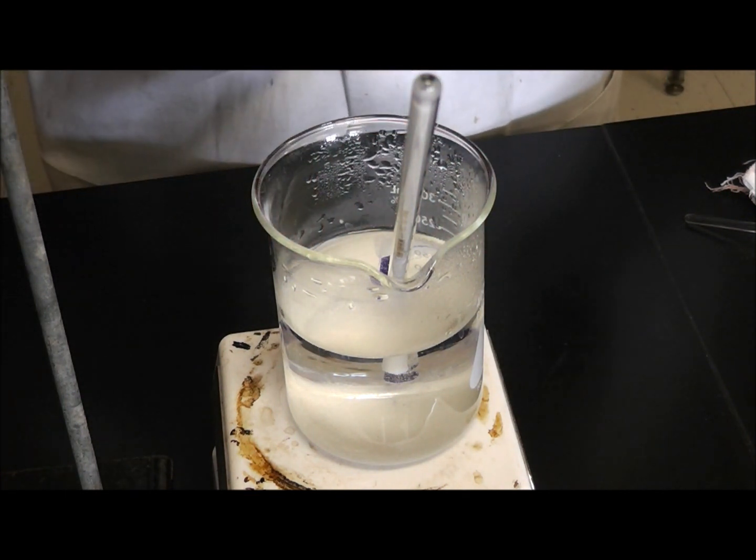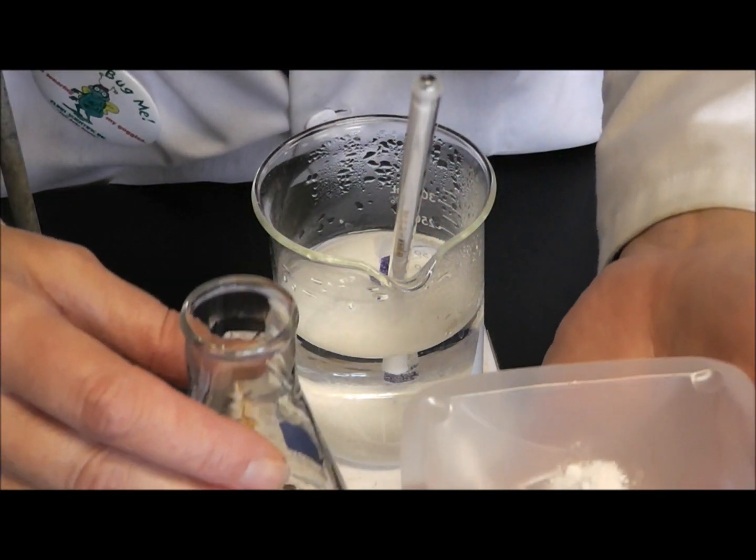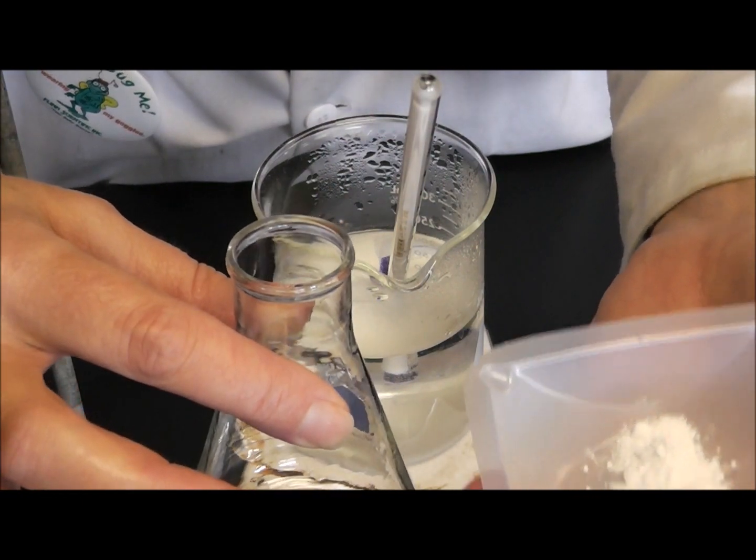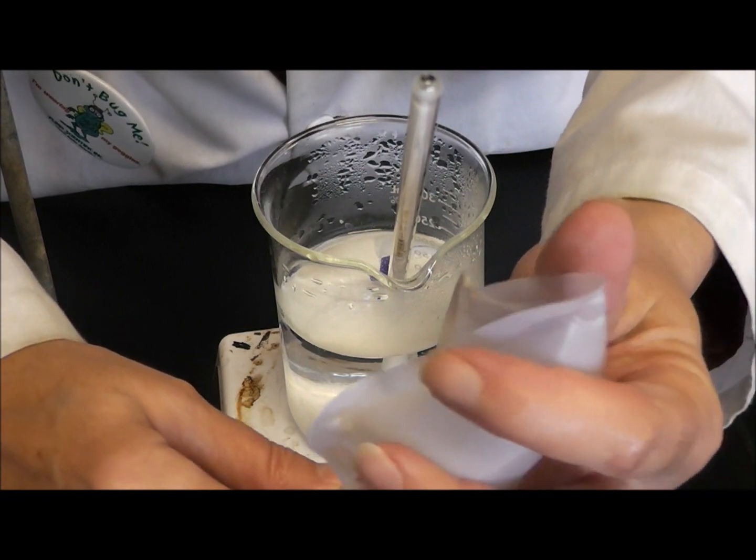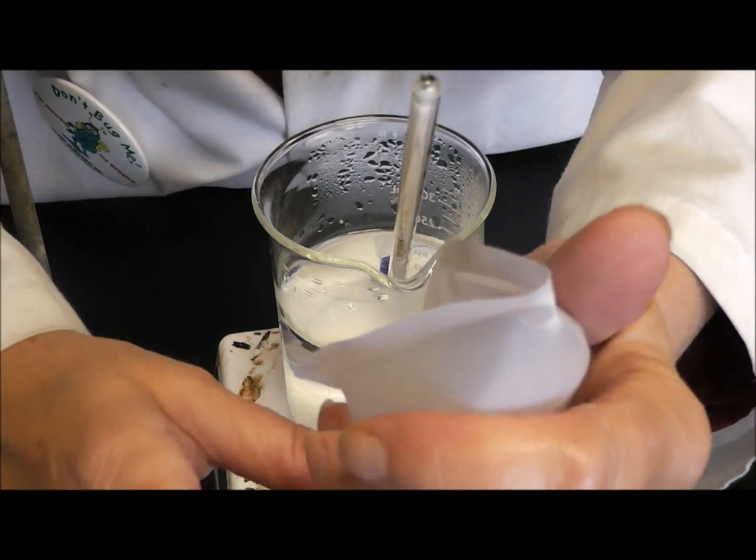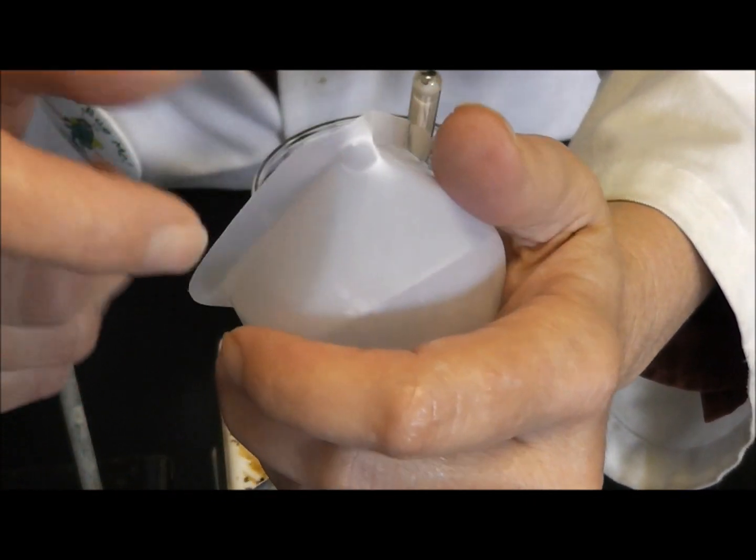What I'm going to do is, I have 1.5 grams of the salicylic acid in my weigh boat here, and I'm going to place that into a clean, dry Erlenmeyer flask, and give it a couple of taps.